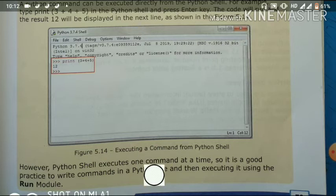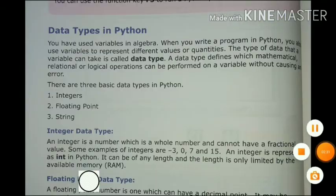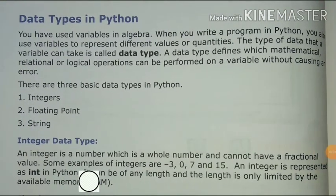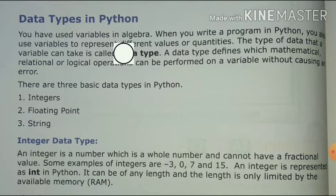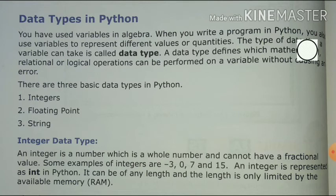Executing using Run Module means one command runs at one time, so it is very easy. Our next topic is data types in Python. You have used variables in algebra — in algebra we use variables. When you write a program in Python, you can also use variables to represent different values of an entity, just as in algebra. If we are creating a Python program, we can use variables to represent different quantities and values.